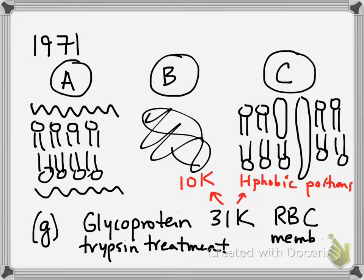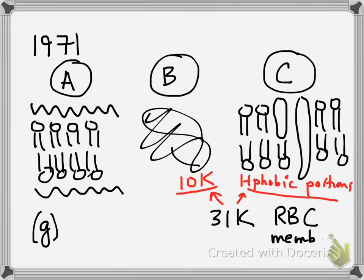So remember, trypsin is a protease. And so with this protease treatment of this glycoprotein in a membrane, you get this result. 10,000 molecular weight pieces and a bunch of hydrophobic pieces. So what does that data mean?